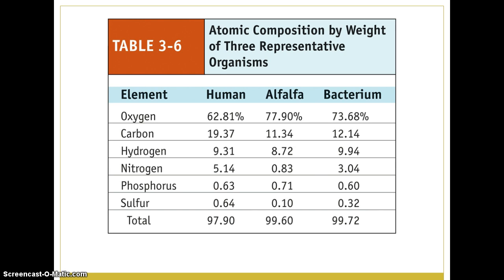The six macronutrients can be recalled with the acronym CHNOPS for carbon, hydrogen, nitrogen, oxygen, phosphorus, and sulfur. The eight micronutrients required in small amounts by all life include calcium, copper, iron, magnesium, manganese, molybdenum, potassium, and zinc.